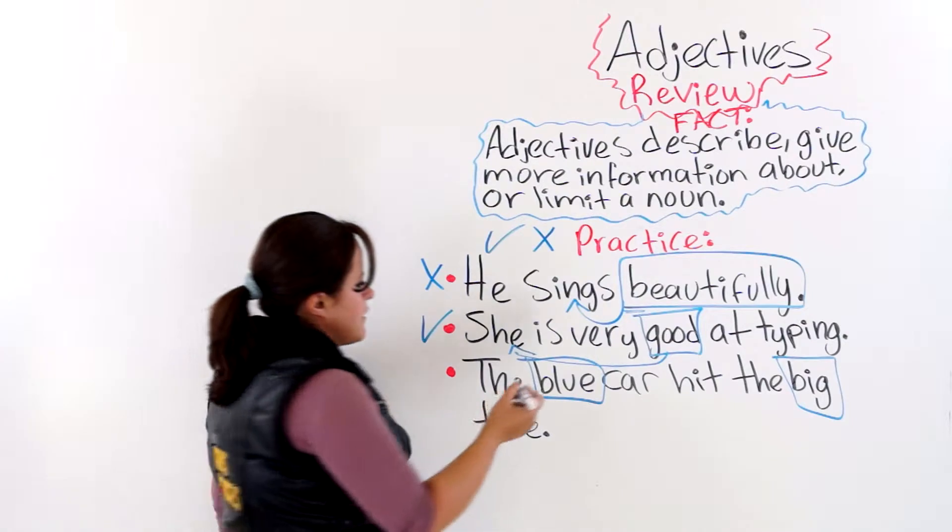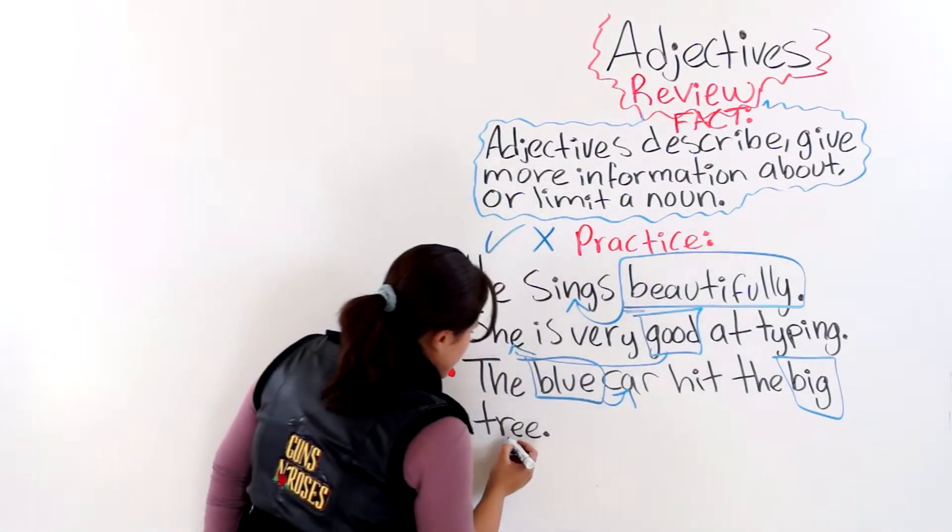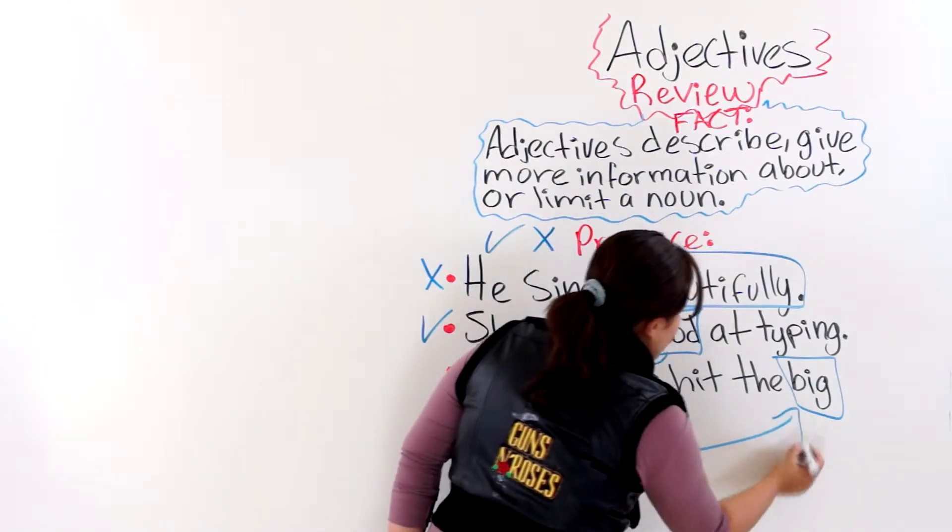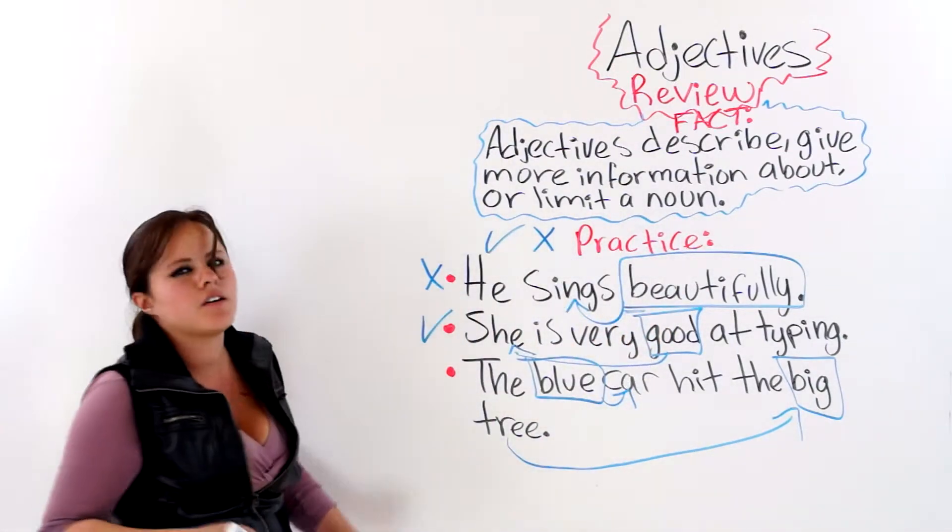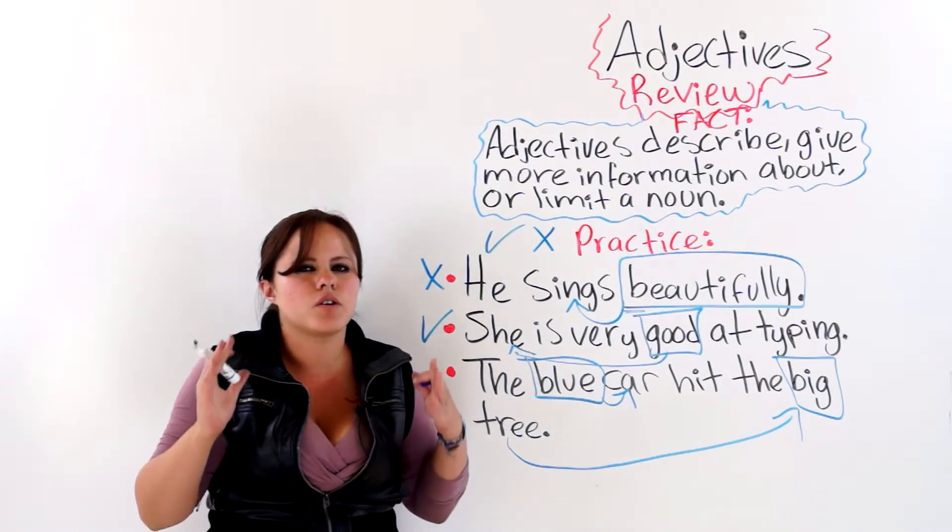And they are describing the car and the tree. So they are adjectives because they are describing a noun and not an action or a verb.